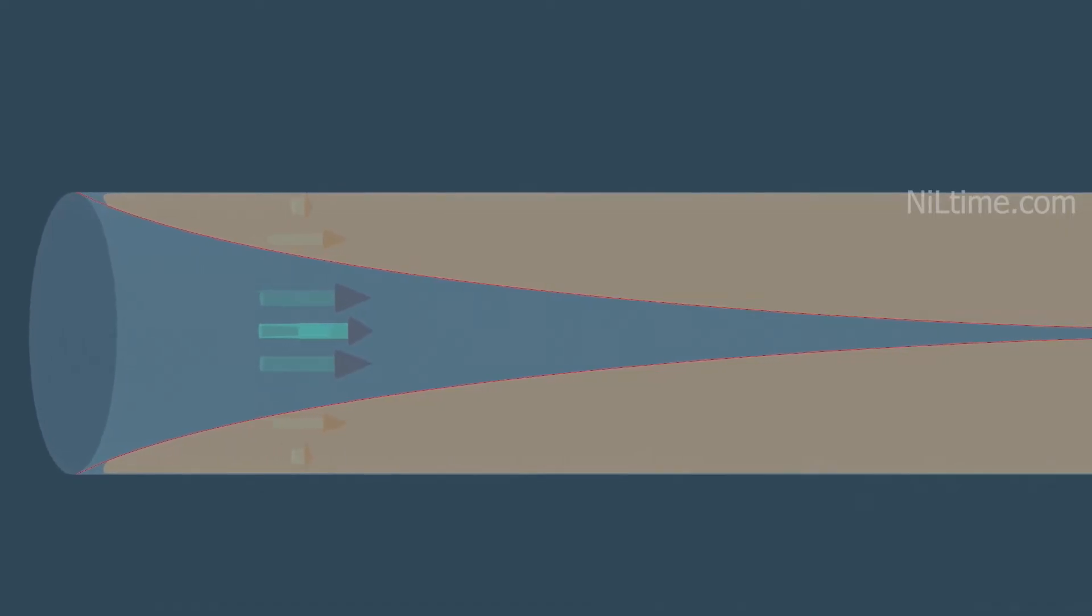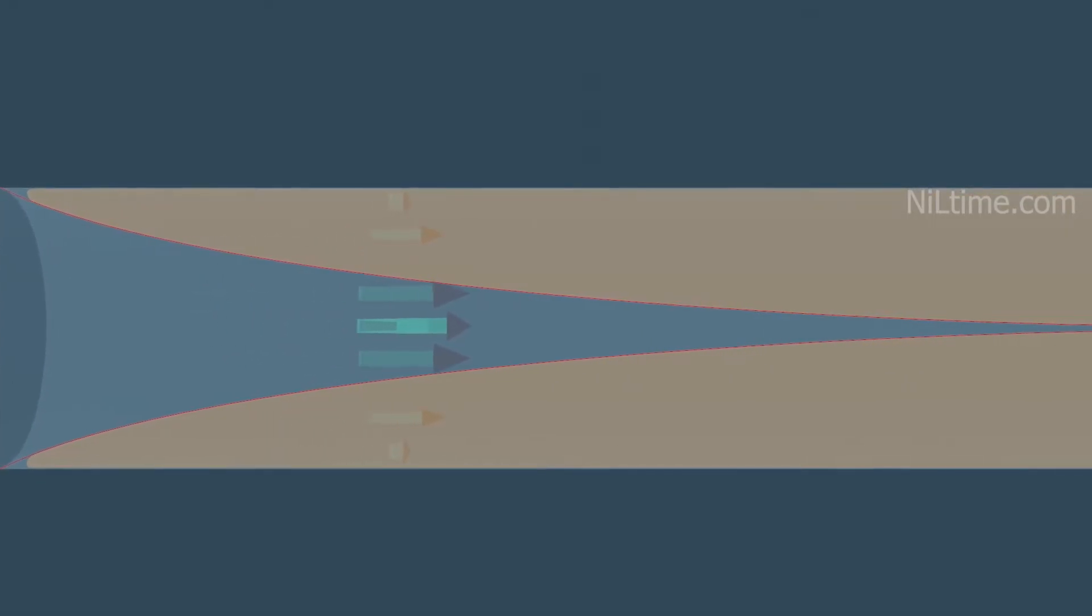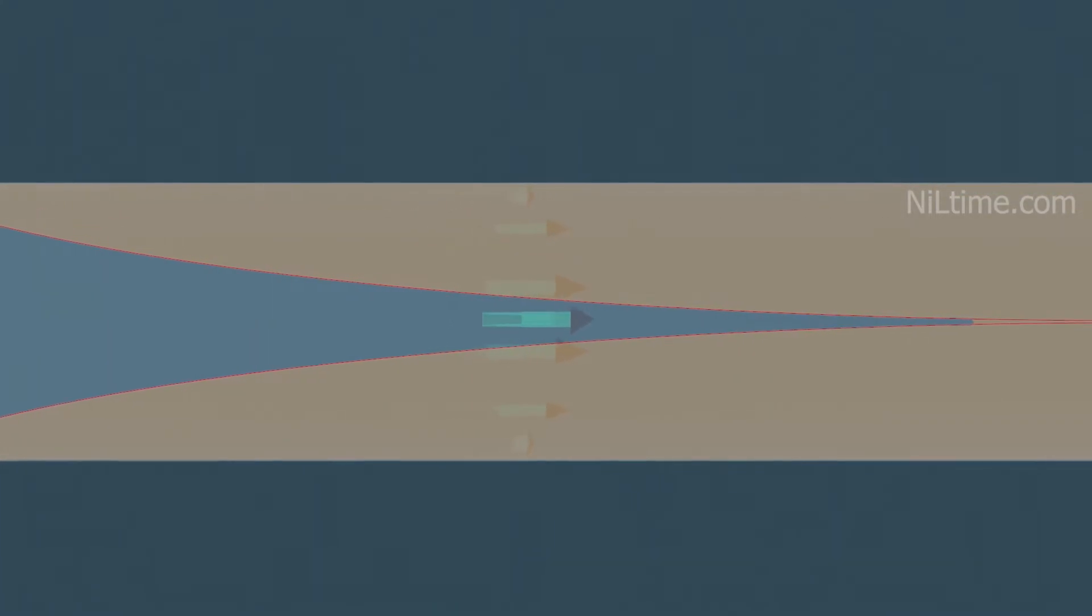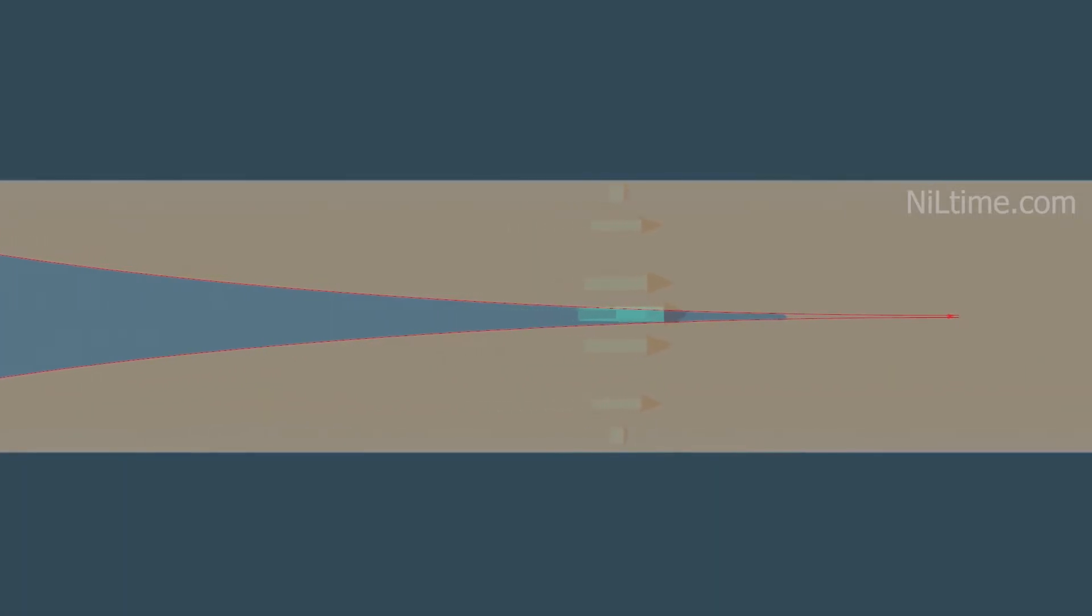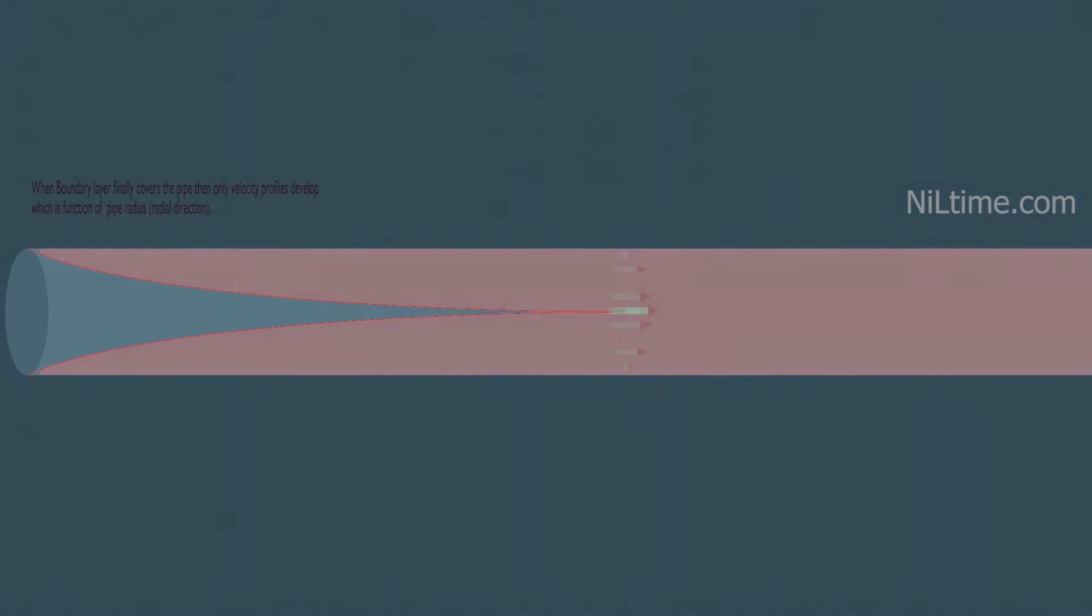As the fluid passes by, the thickness of this boundary layer increases in the flow direction, until the boundary layer reaches the pipe center and fills the entire pipe.